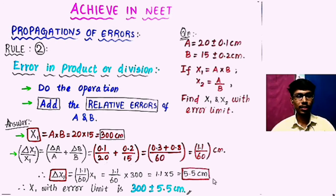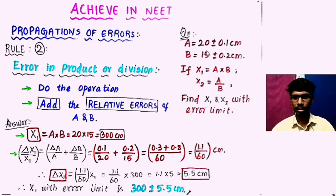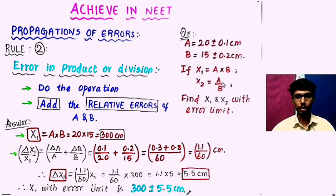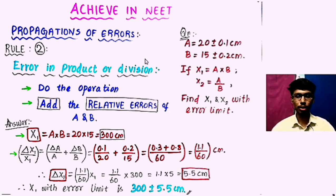Now we are going to see Rule 2: error in product or division. Using the same values — a equals 20 plus or minus 0.1 and b equals 15 plus or minus 0.2 — we have x1 equals a into b and x2 equals a by b. Find x1 and x2 with error limit. The steps are: first do the operation, then second step, add the relative errors of a and b.